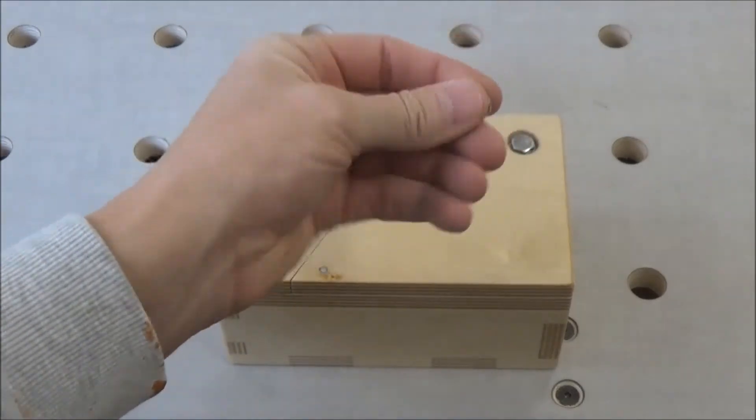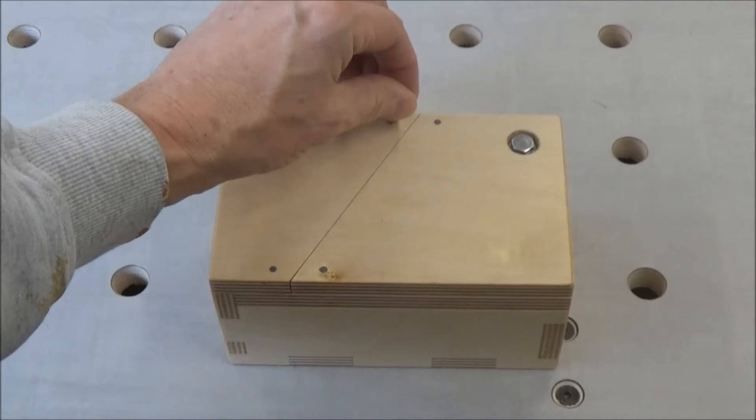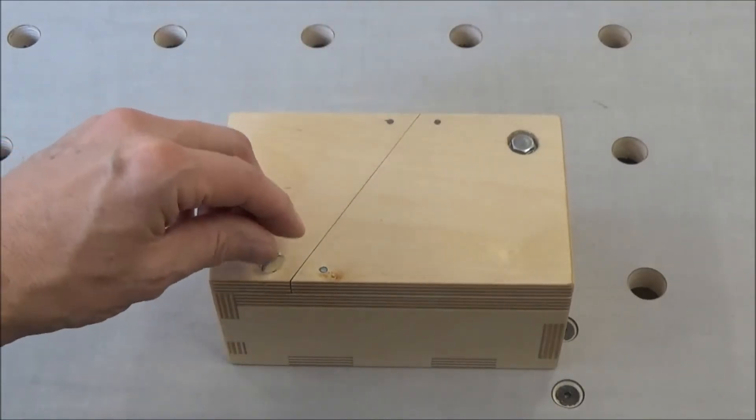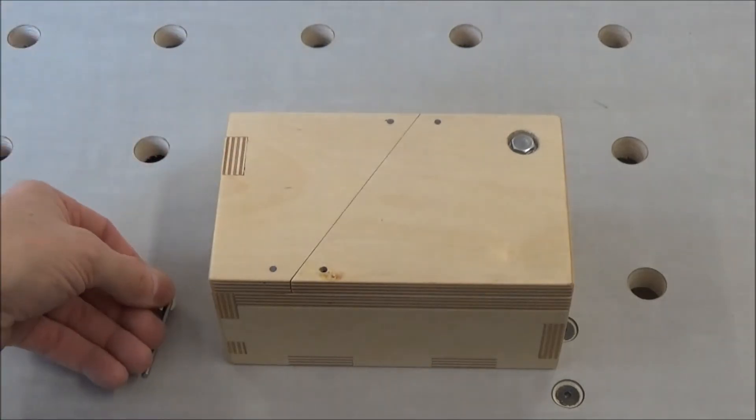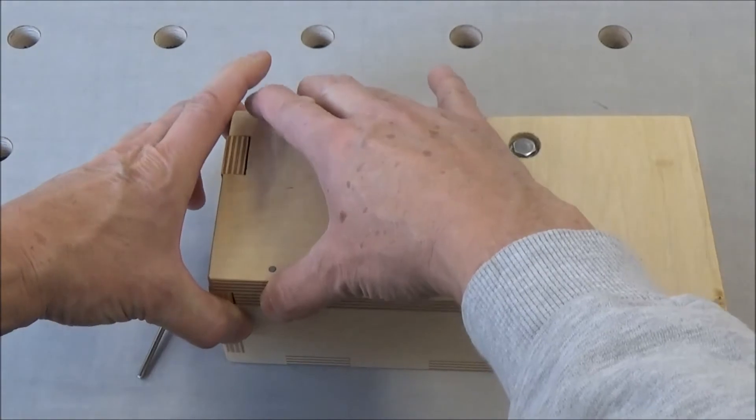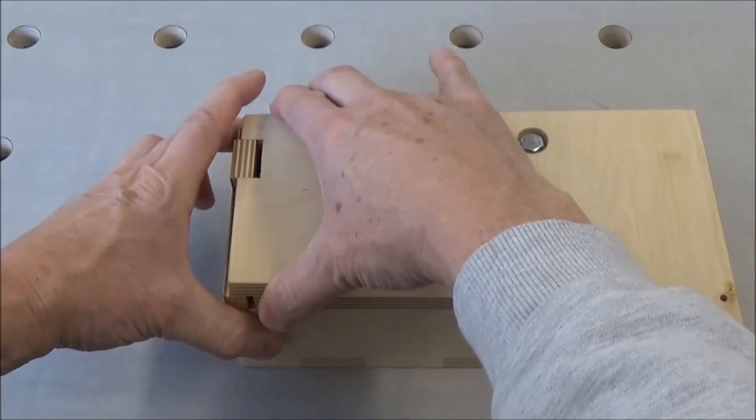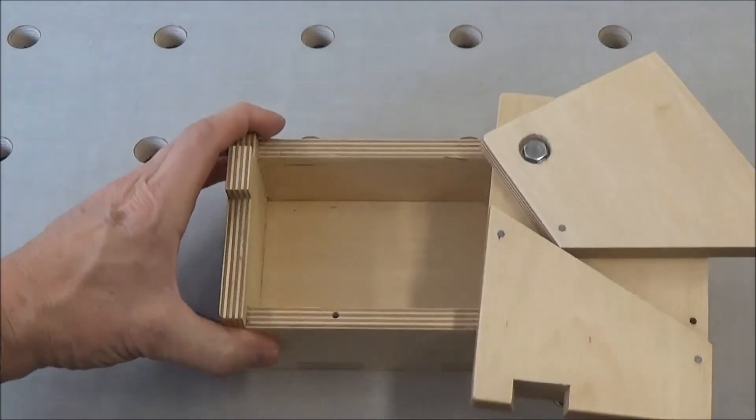You can see here that these do not come out, but that one does. So that's the secret pin pivot that opens the lid. Pull this one back and now you have access to the inside of the box.